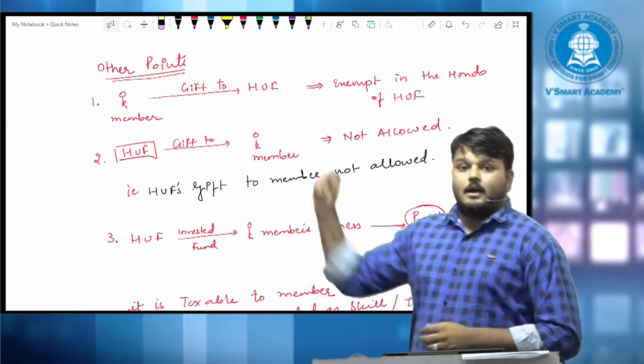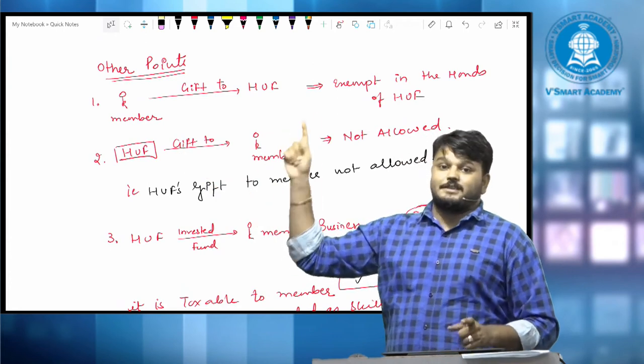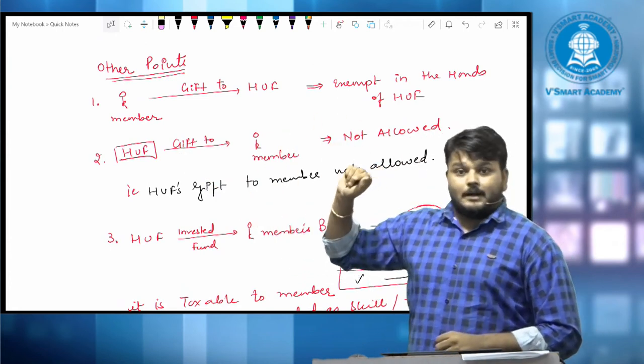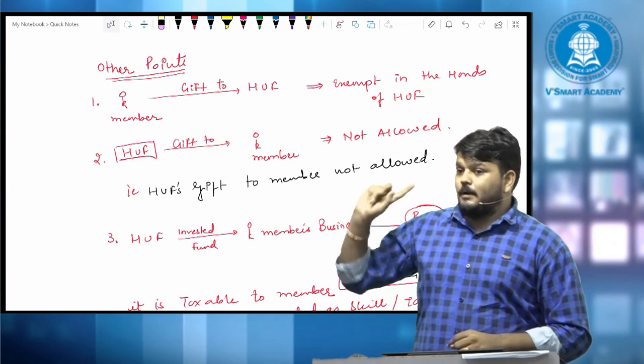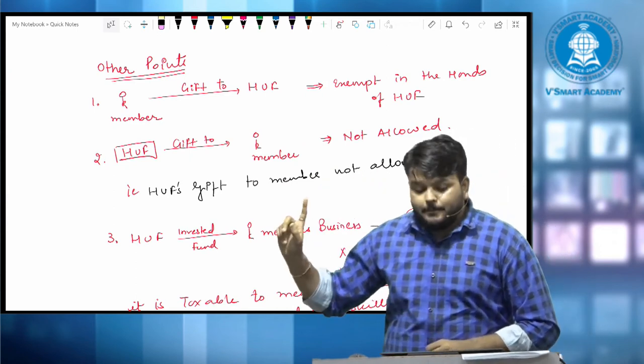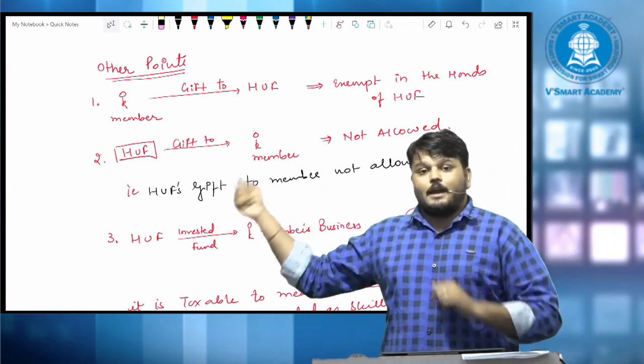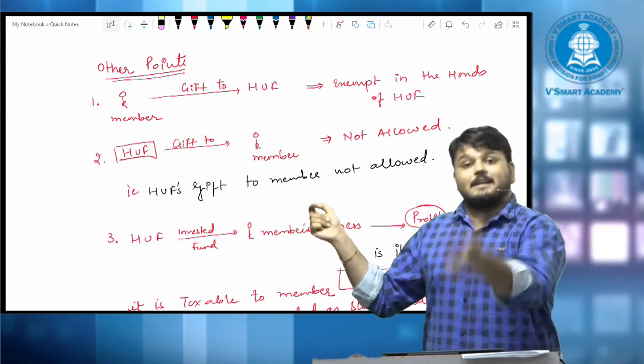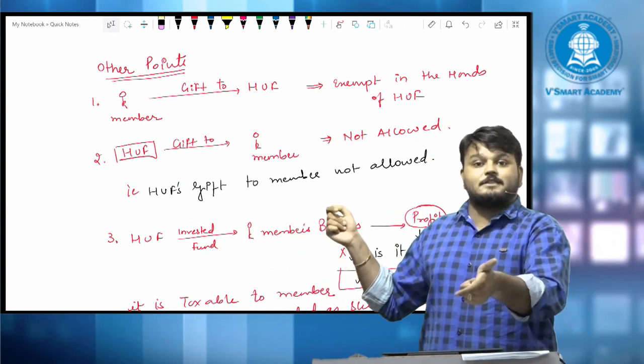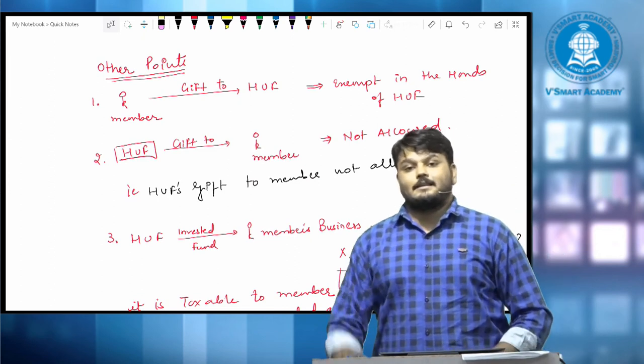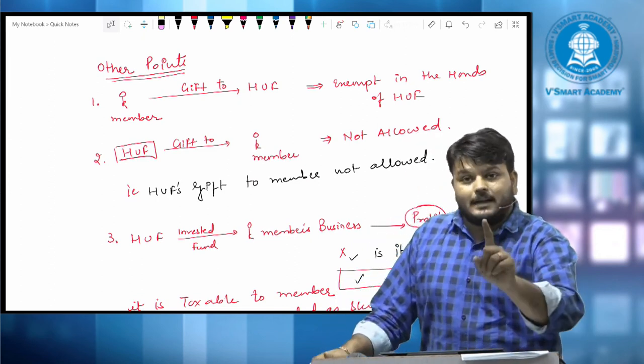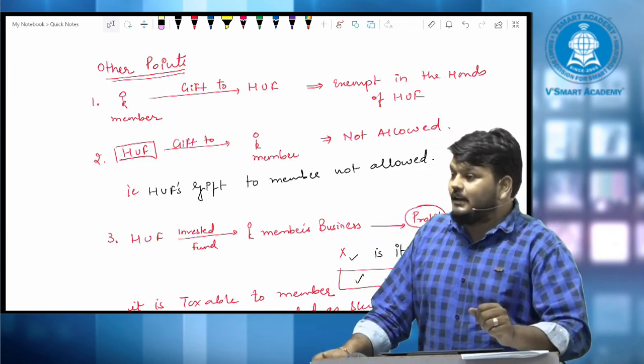Some points need to be remembered. A member can give gift to H.U.F. which is exempt in the hand of H.U.F., but H.U.F. can't give to member. H.U.F. can't give to member. And third, if H.U.F. money is invested in members business, members business, it will not be taxable in the hands of H.U.F. It will be taxable in the hands of that individual only.